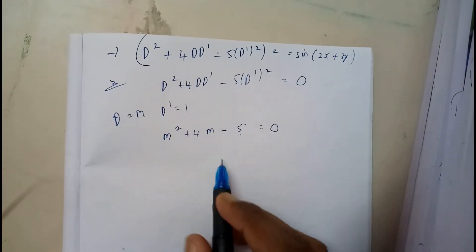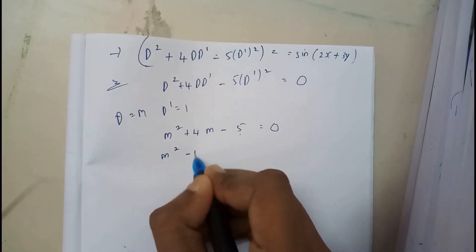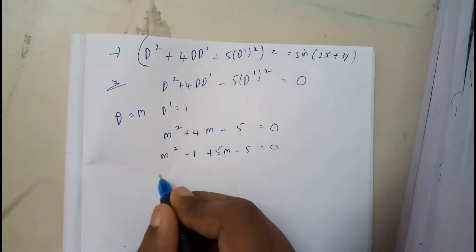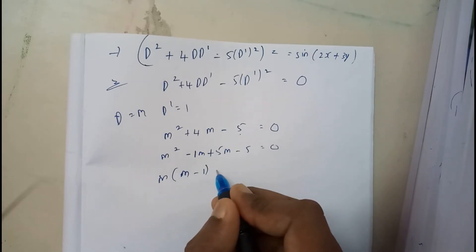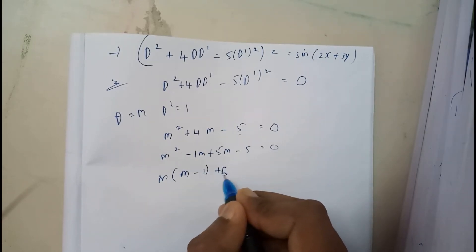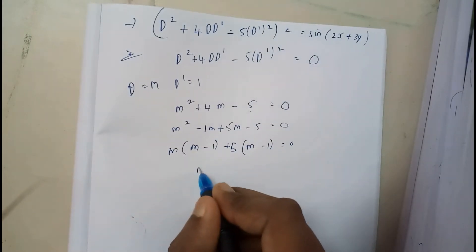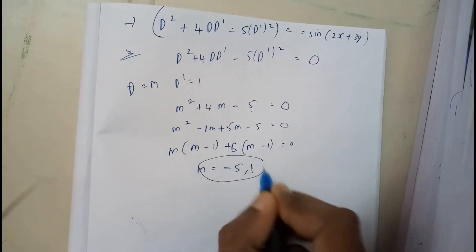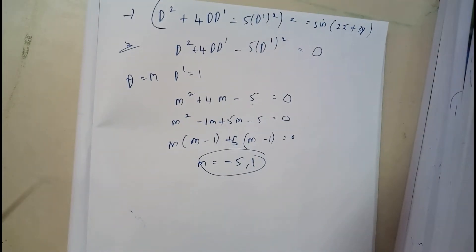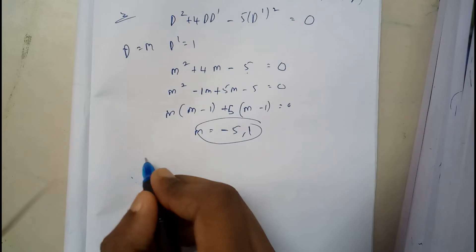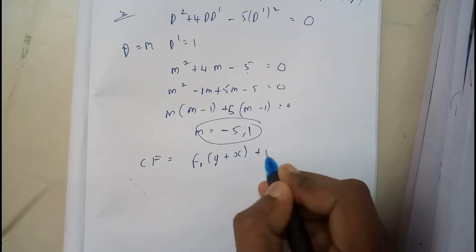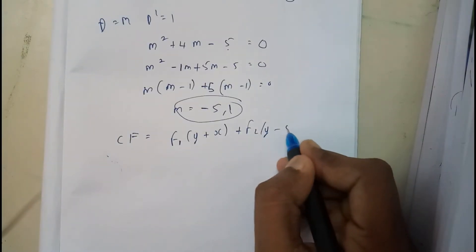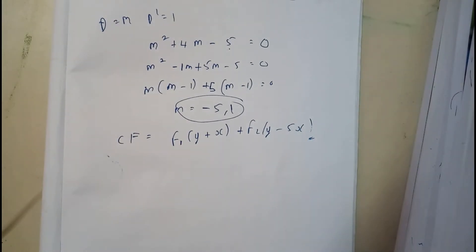Factoring m² + 4m − 5 = 0: we get (m − 1)(m + 5) = 0, so m = 1 and m = −5. The complementary function is therefore f₁(y + x) + f₂(y − 5x). I hope everyone is clear with the complementary function, so let's go through the particular integral.